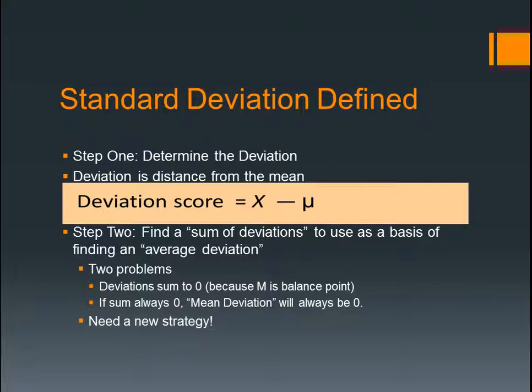Standard deviation defined. Step one is to determine the deviation — so it's just the distance from the mean, and there's your formula for it. Step two is to find a sum of the deviations to use as a basis of finding the average deviation. But there are two problems with that: the deviation sometimes sums to zero because the mean is the balance point, and if the sum is always zero, your mean deviation will always be zero. So we need to do something else.